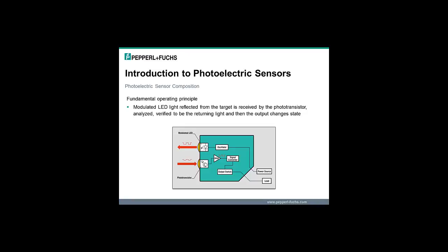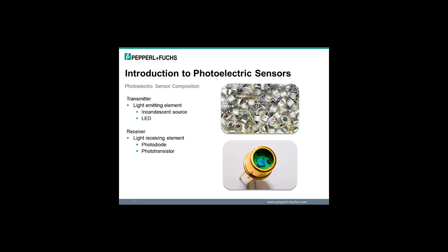Like a light switch being turned on, the output of the sensor is analogous to the switch and the load shown in the diagram is analogous to a light bulb. The main components of a photoelectric sensor are the transmitter and receiver.